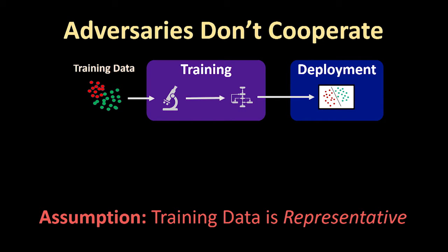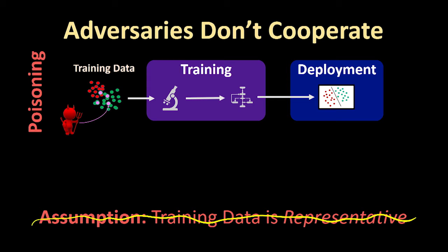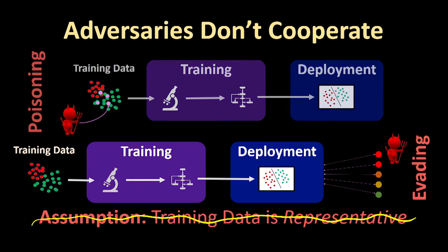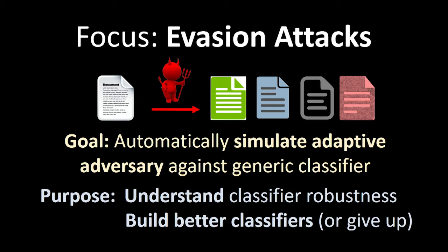There are two issues that could come up. The first is a poisoning attack, where the adversary gets some samples into your training data and causes the training process to produce a bad model. I'm going to assume the adversary doesn't have access to your training data — you build a model on clean data, deploy it, and then the adversary tries to find samples your classifier misclassifies. This is called an evasion attack, and that's what I'll focus on today.